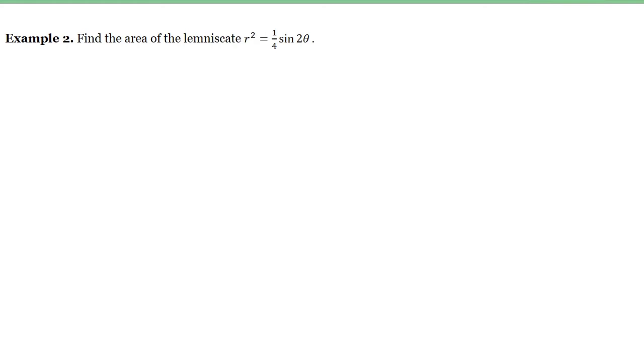Example number 2, we are asked to find the area of the lemniscate r squared is equal to one-fourth sin of 2 theta.